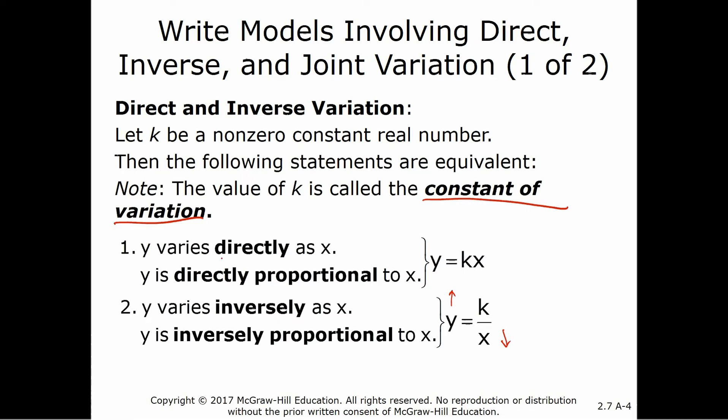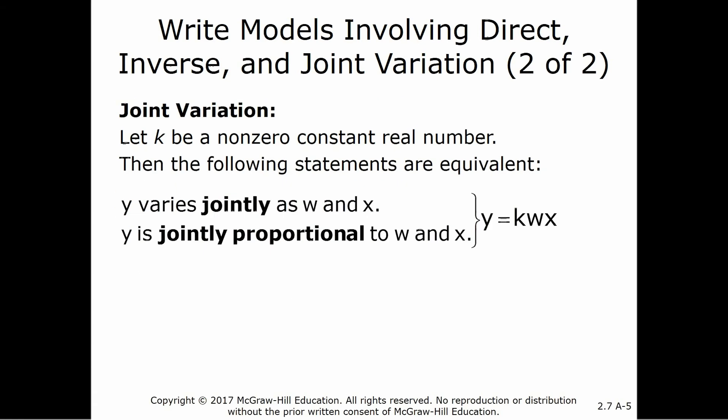So this is direct. This is inverse. Really, these are the two that we're going to deal with. Now, joint just means that both of the things that we're varying by, w and x, are both being multiplied. So jointly is just a different type of direct variation.